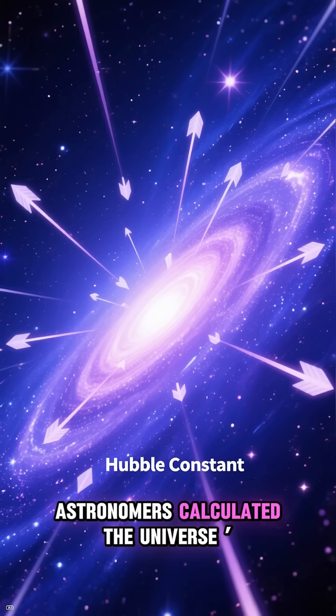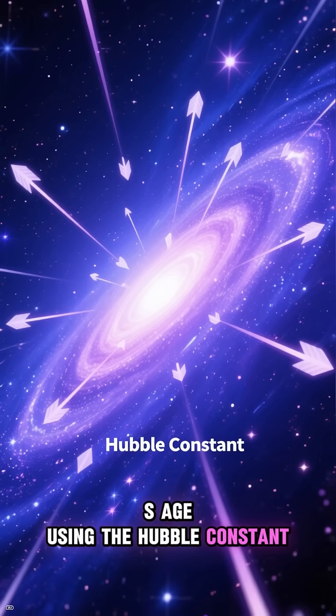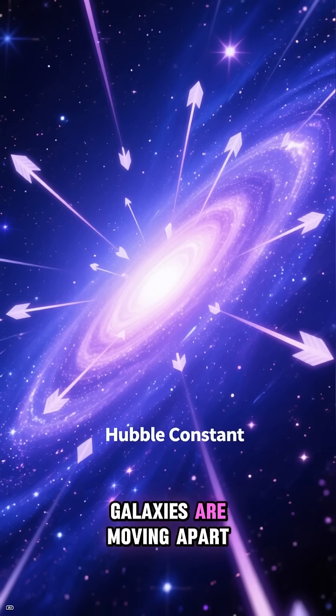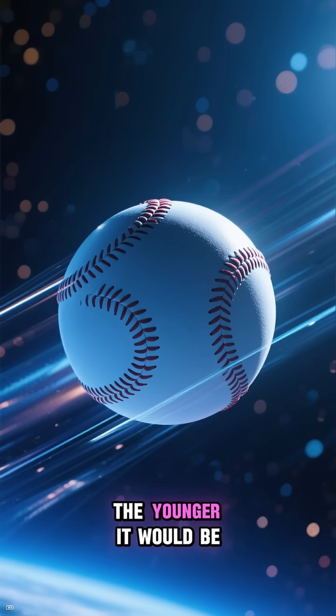Traditionally, astronomers calculated the universe's age using the Hubble constant, the rate at which galaxies are moving apart. The faster the universe expands, the younger it would be.